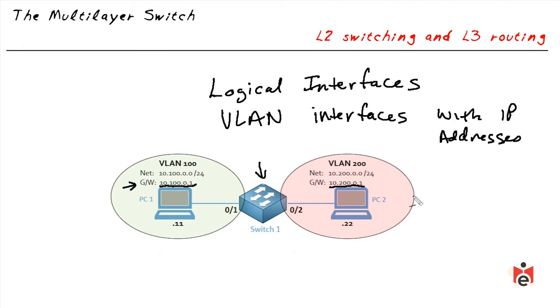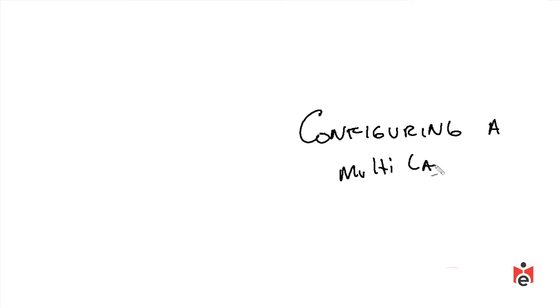In summary, a multi-layer switch is an appliance — physical or virtual — that can forward frames based on layer 2 information like a traditional switch, but also has the capability to make IP routing decisions based on layer 3 IP information, acting as a layer 3 router. In this section, we'll walk through a hands-on lab configuring a multi-layer switch.